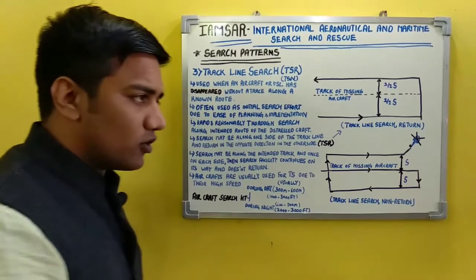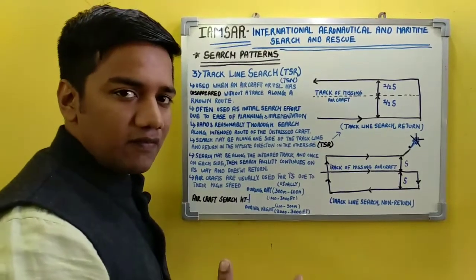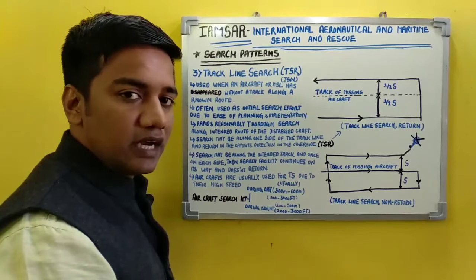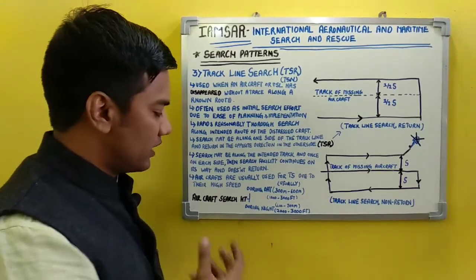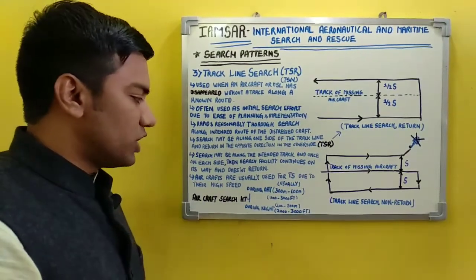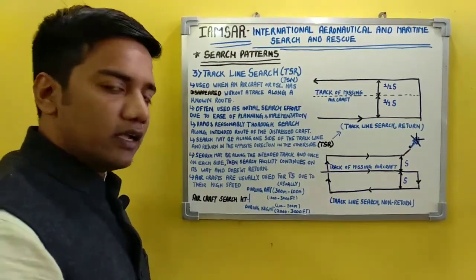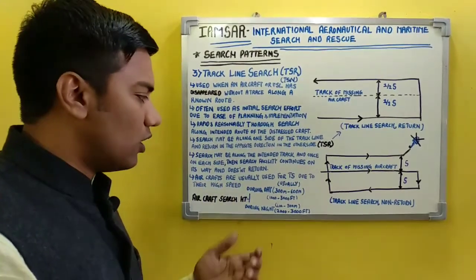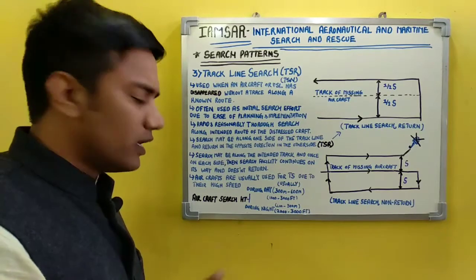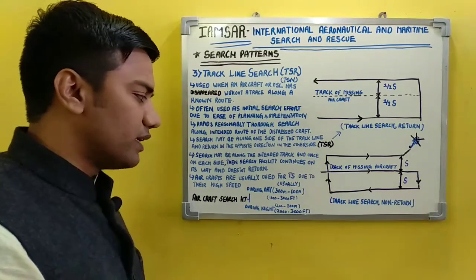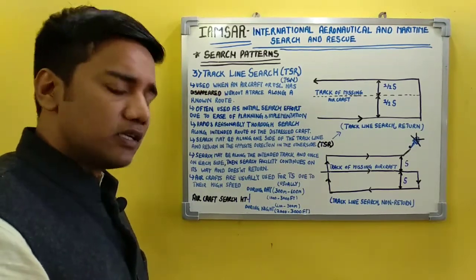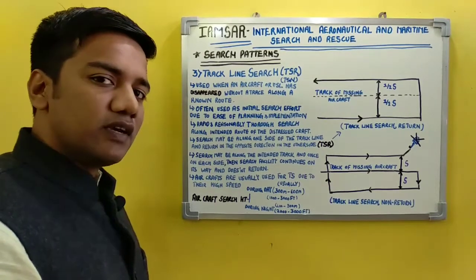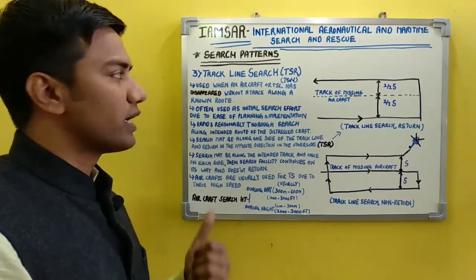Aircraft are usually used for track line search because of their high speed — they can cover a much larger area in very little time. The aircraft search height during the day is 300 to 600 meters, or between 1,000 to 3,000 feet. During night, it is 600 to 900 meters, or between 2,000 to 3,000 feet. So this is the requirement for your track line search.